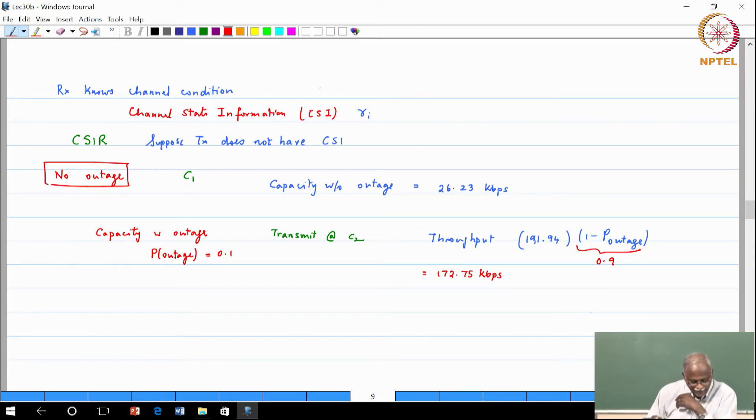Now we then start asking the question what can we do if the transmitter has knowledge of the channel state information. That is a very important question.